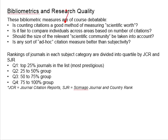Is counting citations a good method to measure scientific worth? Is it fair to compare individuals across areas based on numbers of citations? Should the size of the relevant scientific community be taken into account? This is especially important when comparing across different fields — some are obviously more popular with more researchers involved, while others are highly specialized with fewer researchers. Is there any sort of ad hoc citation measure better than existing ones?